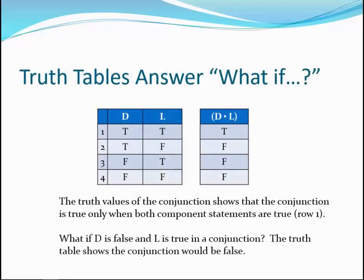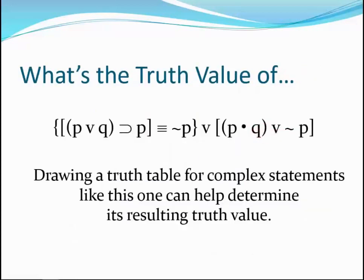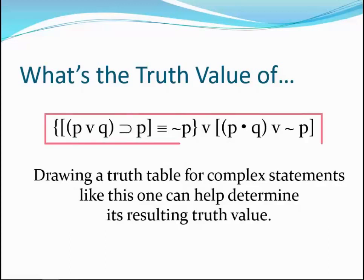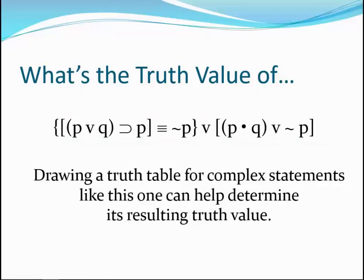Truth values allow us to answer what-if questions. For instance, what is the truth value of the conjunction of D and L if D is false and L is true? That's what row three shows — the conjunction would be false. We know both values have to be true for the conjunction to be true, and only row one in the base table shows that combination. Truth tables really become useful when we need to determine the truth value of multiple statements with many connectors. Becoming thoroughly familiar with truth tables for the five connectors is essential to solving more complex problems, since determining truth value is just a step-by-step process of evaluating components until we can determine the truth value of the main connector. There really aren't more complex rules to learn — it's just a matter of applying what you know about the five connectors one step at a time.